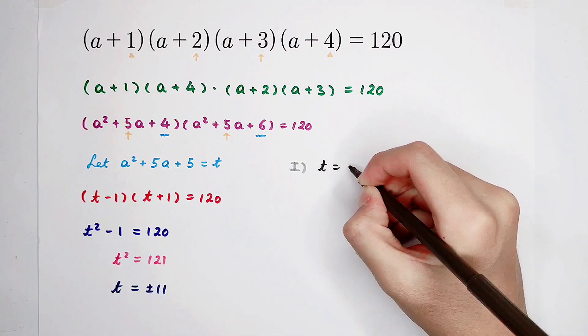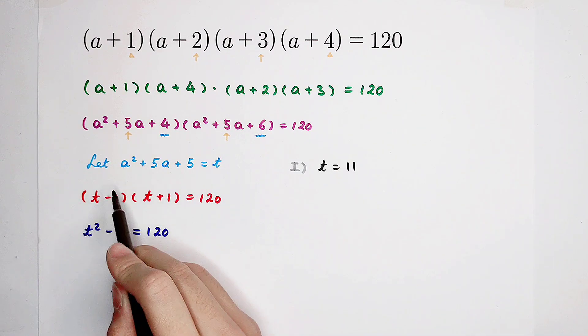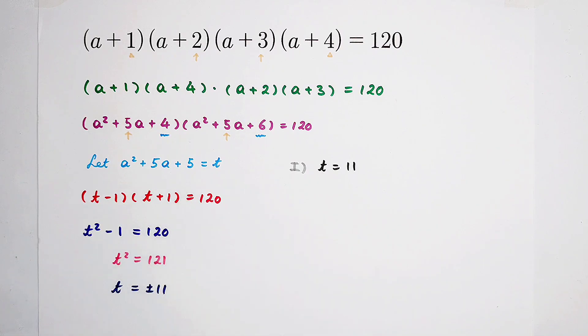If t is 11, positive 11, then substitute it back. a squared plus 5a plus 5 equals 11.